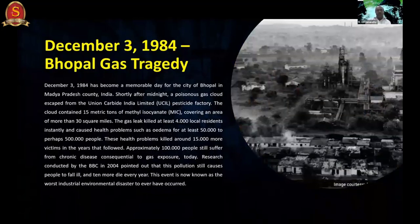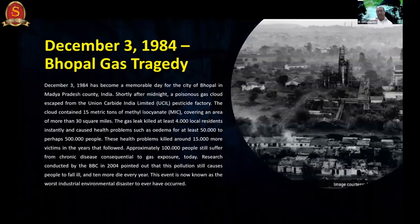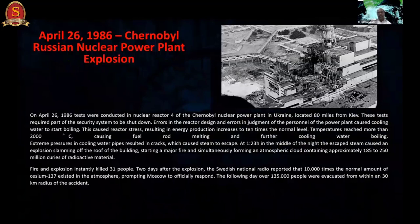The Bhopal Gas Tragedy on December 3, 1984 is well known. A poisonous gas cloud escaped from the Union Carbide India Limited pesticide factory, containing 15 metric tons of methyl isocyanate, covering more than 30 square miles. At least 4,000 local residents were killed instantly, and 5 lakh people suffered ongoing health problems. The impact of the gas continues in Bhopal even today.